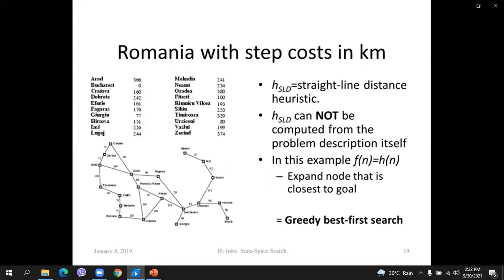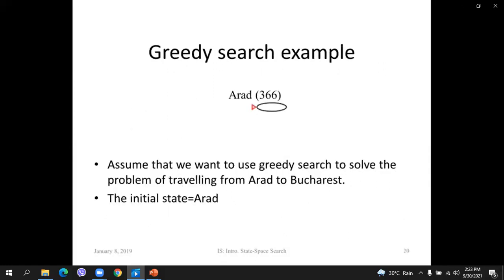Greedy best-first search takes the heuristic value — in this case the beeline distance from a city in Romania to Bucharest — as the best state to evaluate in our fringe. We have a list of distances. Those values come from a table: basically all the distances from all these cities on the map to Bucharest. The goal is to go from Arad to Bucharest, and the beeline distance between Arad and Bucharest is 366 kilometers.